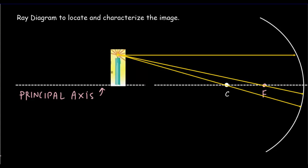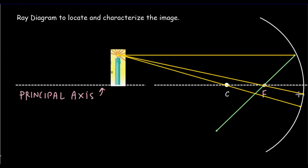Let's try our first ray diagram. We have an object and we want to locate where the image is going to be. We choose three simple rays: one parallel to the principal axis, one through the focal point, and one through the center of curvature. The ray parallel to the principal axis reflects through the focal point. The ray through the focal point reflects parallel to the principal axis. And the ray through the center of curvature reflects straight back through the center of curvature.